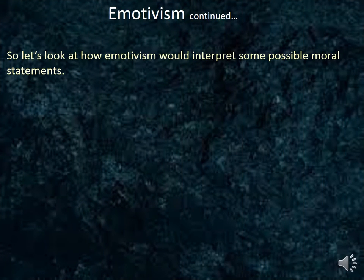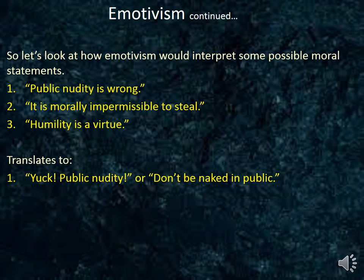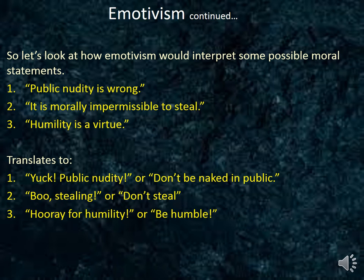Let's look at how emotivism would interpret some possible moral statements. First: 'Public nudity is wrong.' Second: 'It is morally impermissible to steal.' Third: 'Humility is a virtue.' These translate as follows. The first translates as 'Yuck, public nudity!' or 'Don't be naked in public.' The second translates as 'Boo, stealing!' or 'Don't steal.' And the third can be translated as 'Hooray for humility!' or 'Be humble.' The important idea is that the emotivist claims that moral terms perform these kinds of speech acts, as opposed to reporting facts which can either be true or false. Moral language is a form of speech act that does not refer to true or false propositions about the world, but the speech act still holds meaning as part of a language game.